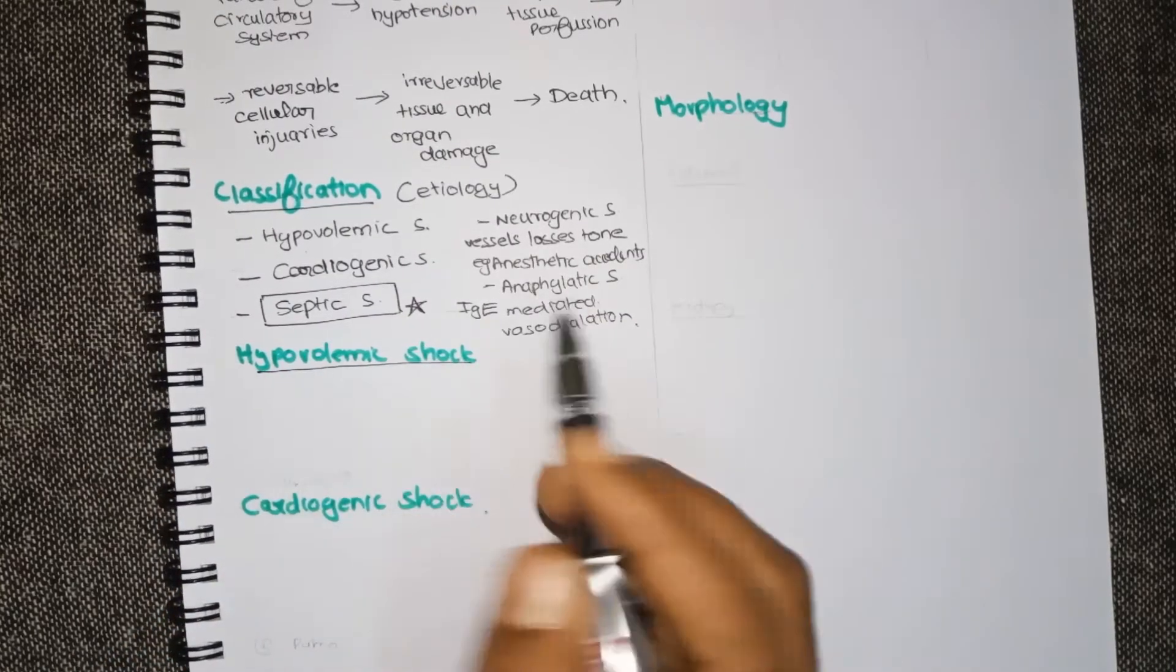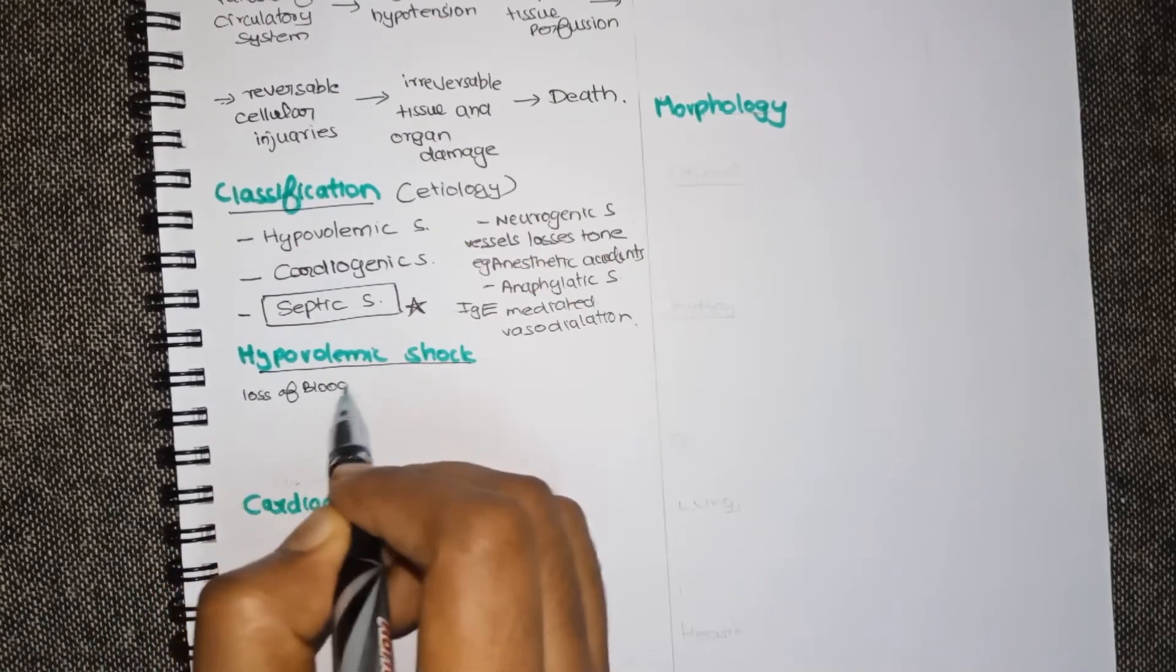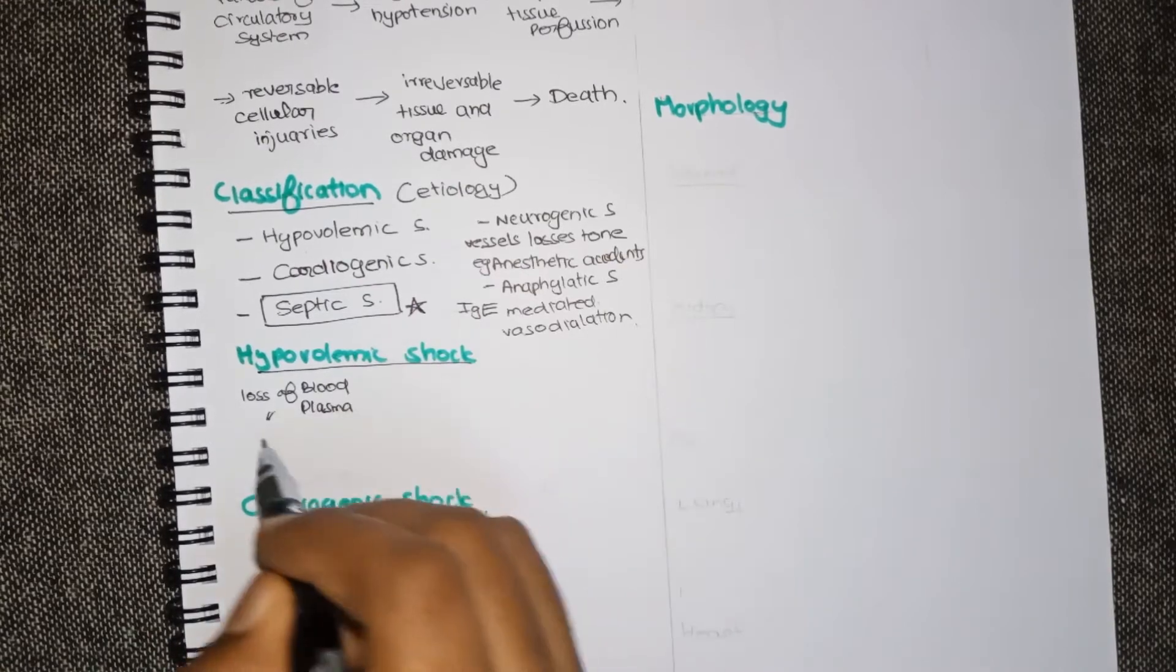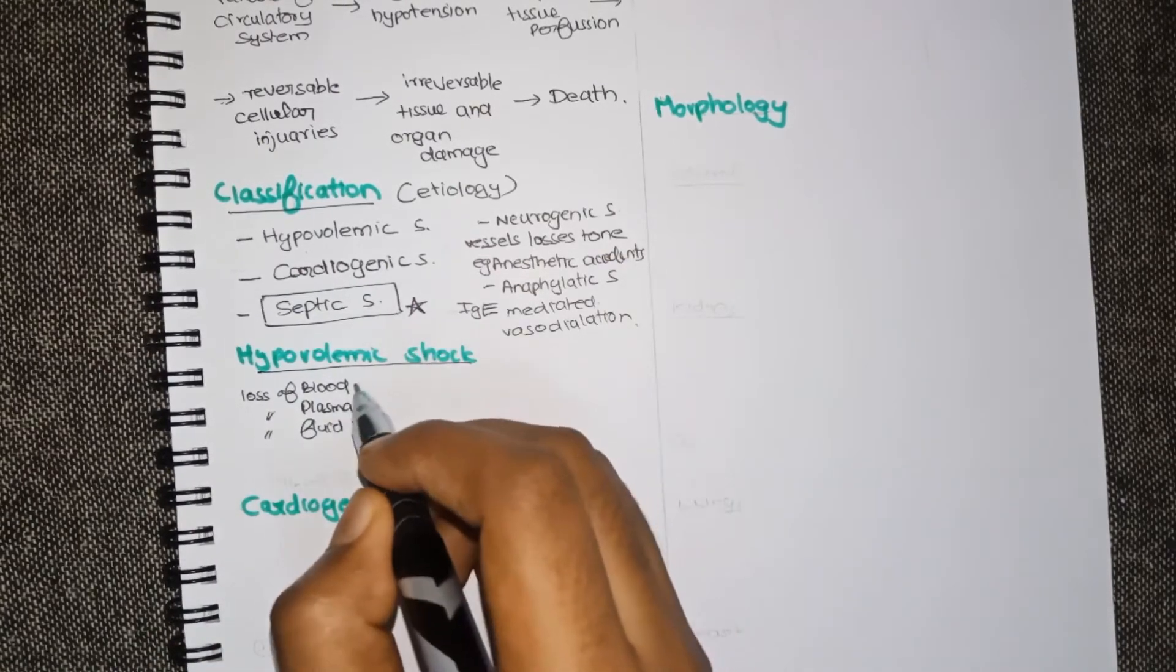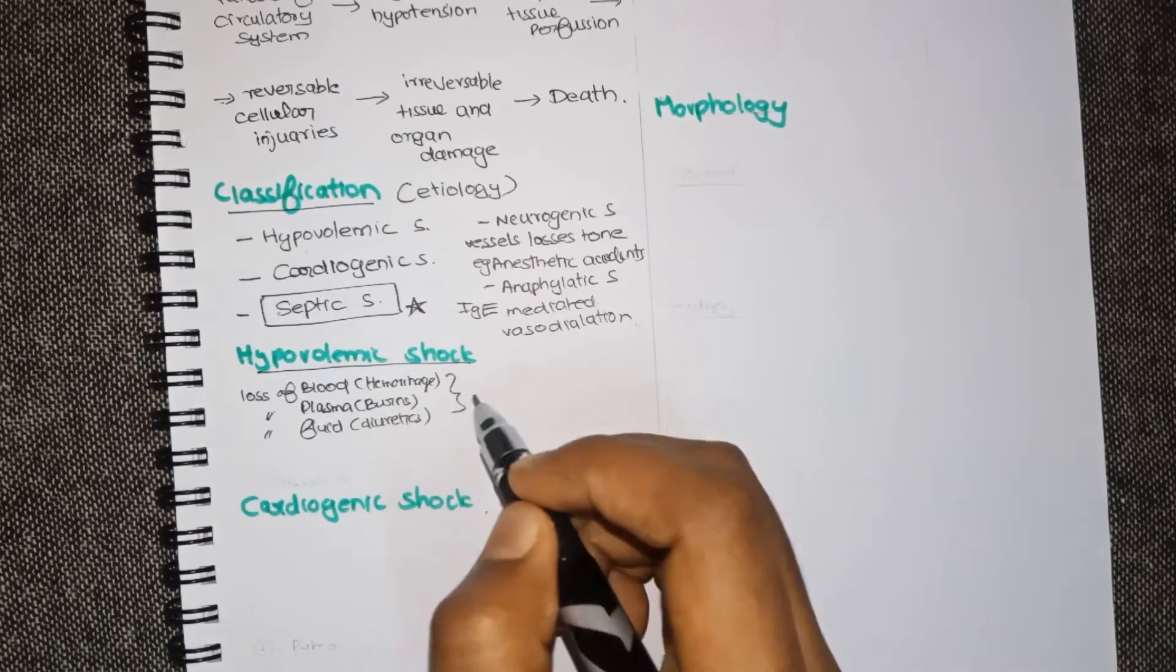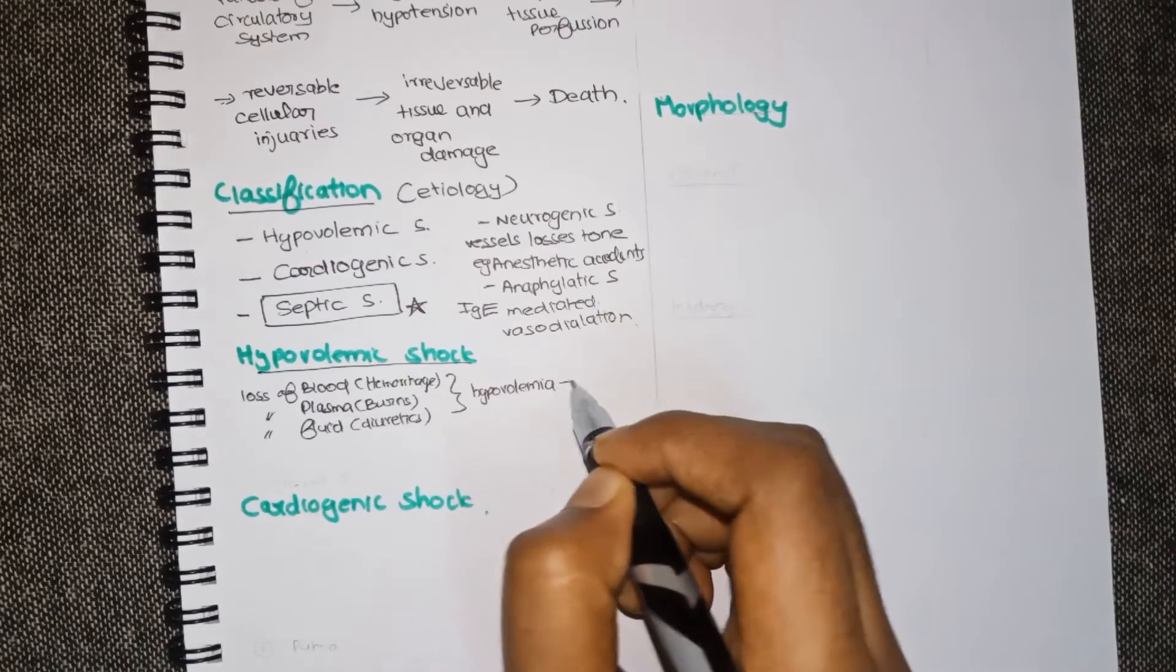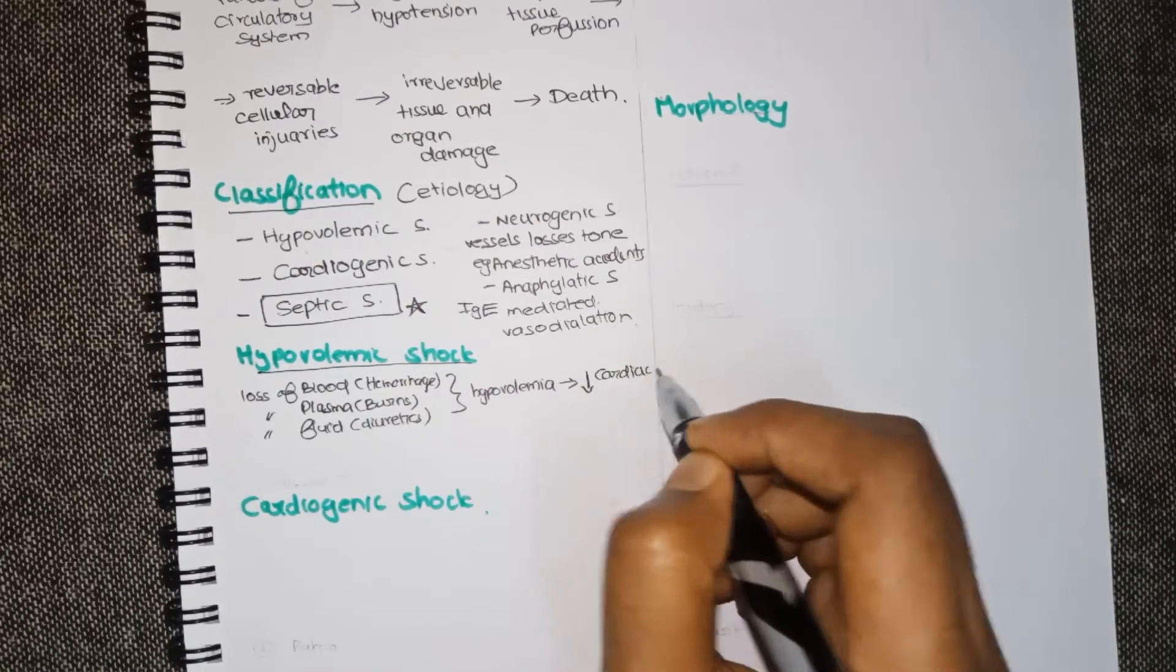Hypovolemic shock as the name suggests is due to the decrease in the volume of blood. It can be due to loss of blood or loss of plasma or loss of fluid. Blood can be lost in hemorrhage, plasma in burns, fluid while using diuretics or in case of diarrhea. All these cause hypovolemia.